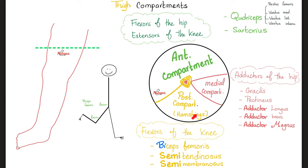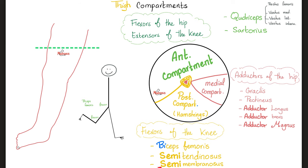The flexors of the knee — the posterior compartment or hamstring muscles — are behind your femur. Imagine that you were driving down the highway and you looked in the rear view mirror to see two semi-trucks behind you and you said, 'Two semi-trucks.' Two is bi, semi and semi: biceps femoris, semitendinosus, semimembranosus.